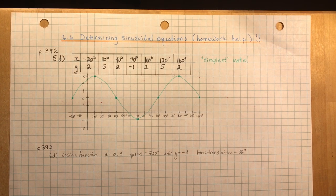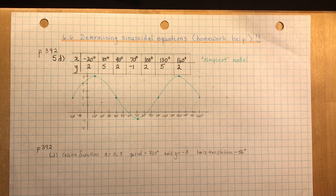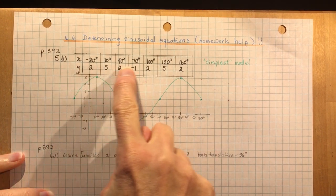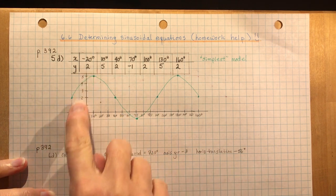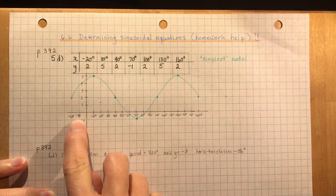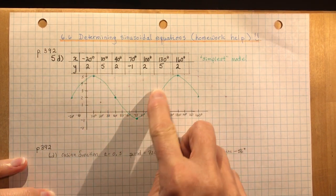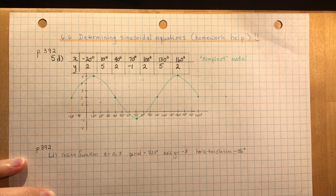For question 5d, I've graphed the set of data they gave you exactly like this. When you're graphing, make sure you have an appropriate scale so you don't run out of space, and make it nice and neat so that you can understand it by looking at it.